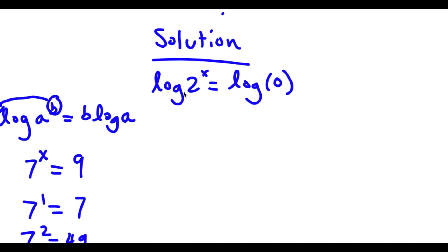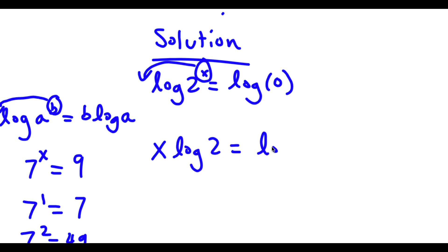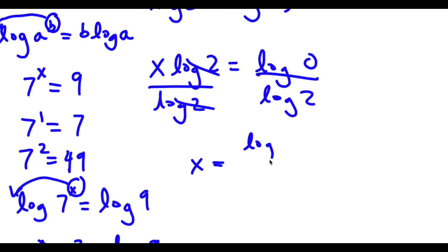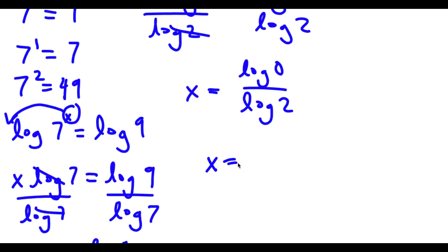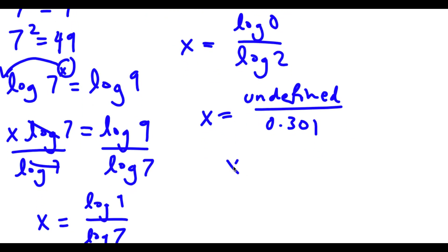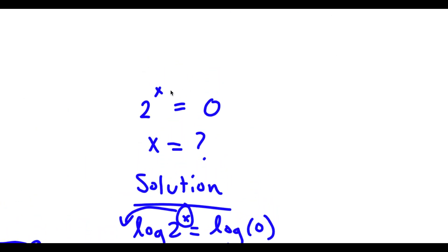So applying this to our problem: log 2 to the power of x becomes x times log 2 is equal to log 0. To solve for x, I divide both sides by log 2, giving x equals log 0 over log 2. Now log 0 is actually undefined, and log 2 is approximately 0.301. Because log 0 is undefined, you cannot divide it by another number, so x is undefined — meaning this equation has no solution.